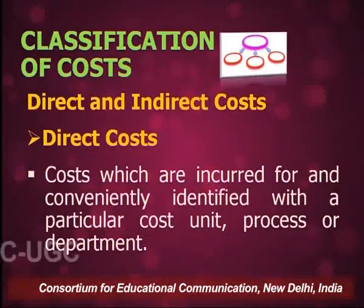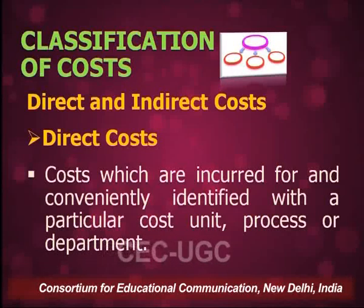We have discussed cost object, cost unit, and cost center — terms used for ascertaining cost. Now let us discuss the classification of cost. Cost can be classified in various ways. This classification is important so that we can find out exactly what cost is being incurred and for controlling purposes. The first classification is on the basis of direct cost and indirect cost.